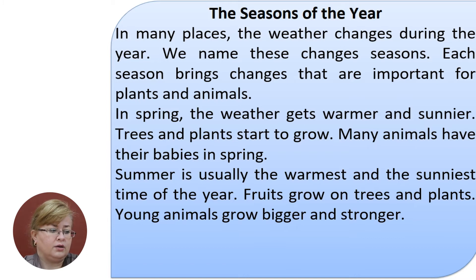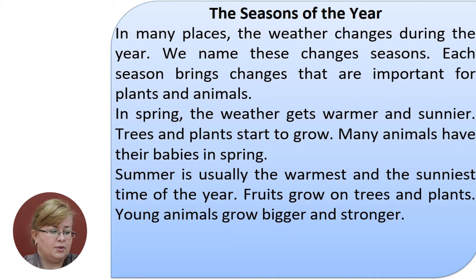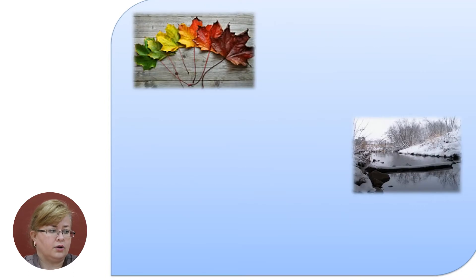In spring, the weather gets warmer and sunnier. Trees and plants start to grow. Many animals have their babies in spring. Summer is usually the warmest and the sunniest time of the year. Fruits grow on trees and plants. Young animals grow bigger and stronger.